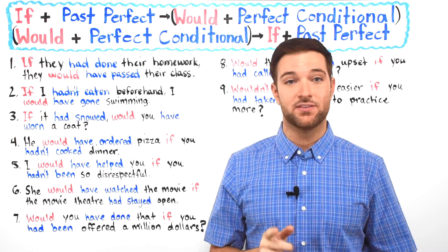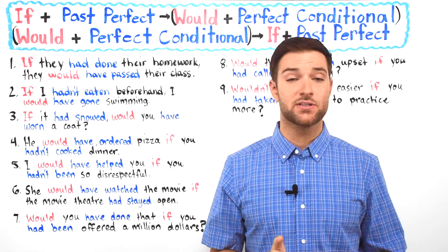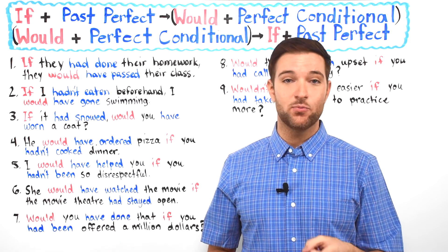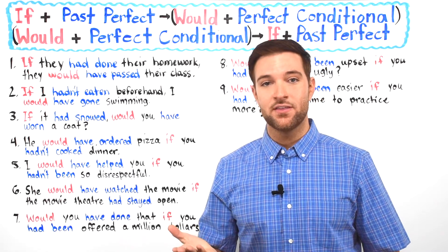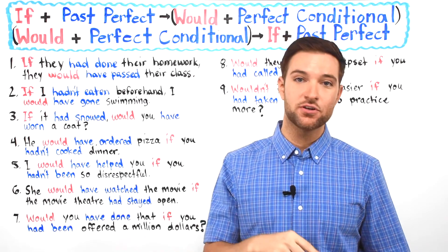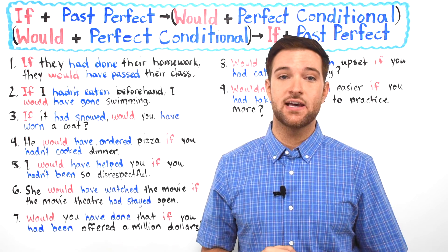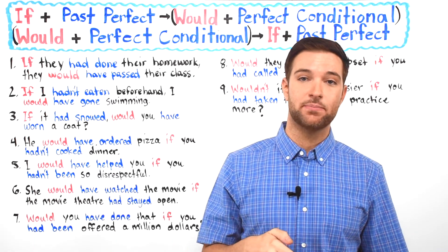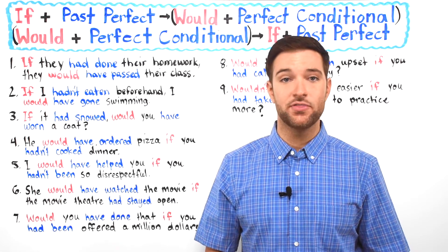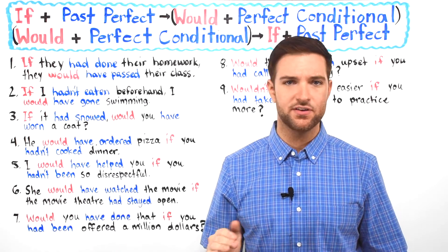So if you remember, the type 0 conditional says that if this happens, then that happens. For example, if you freeze water, you get ice. The type 1 conditional says that if this happens, then this will happen — so if you freeze water, it will turn to ice. The type 2 conditional says that if this happened, then this would happen too. For example, if I won the lottery, I would buy a new house.